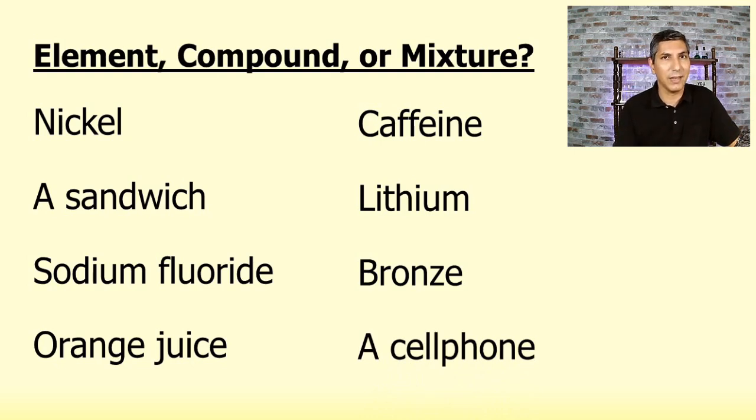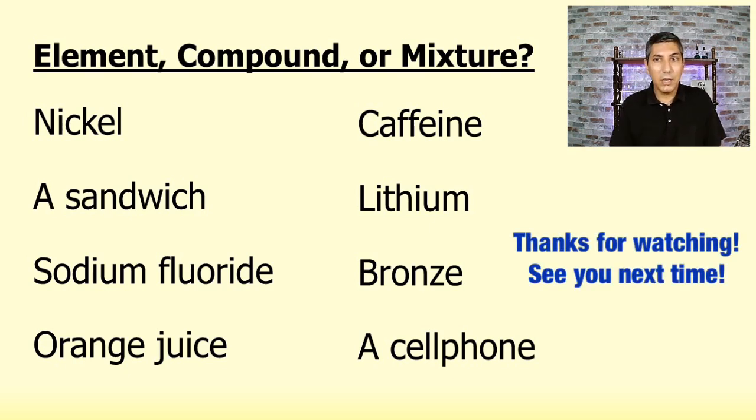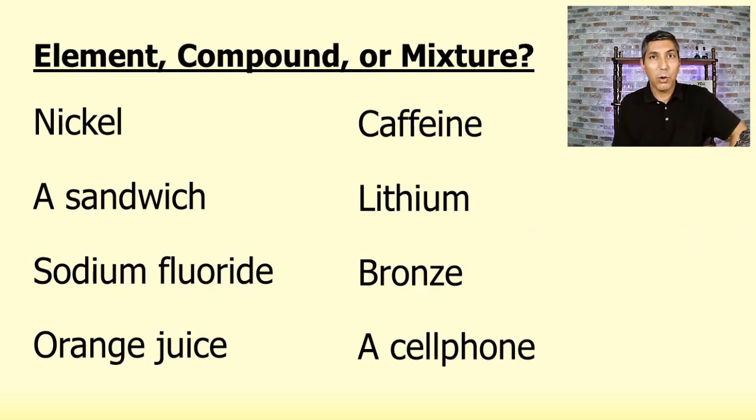Finally, we have a cell phone. Well, that's obviously a mixture, isn't it? And it has all kinds of different substances in there, probably a computer chip made of silicon. Who knows what else is in there? But that's a good example of a heterogeneous mixture. I hope you learned something from this video. And if you did, please smash that thumbs up button. I hope to see you in the next video where we can learn some more chemistry together.